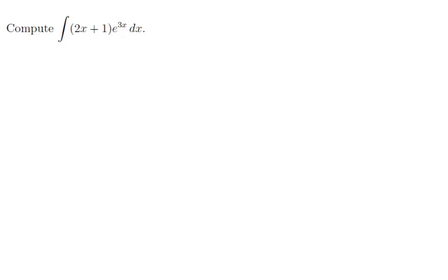Compute the indefinite integral of 2x plus 1 times e to the 3x dx. Now you might notice that we've done this once before using integration by parts. This time, let's just use the tabular method of IVP instead.